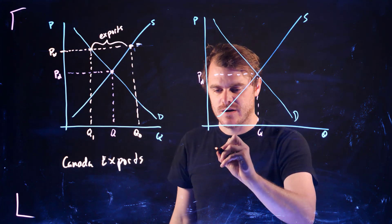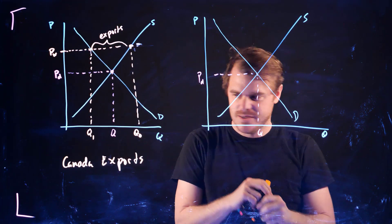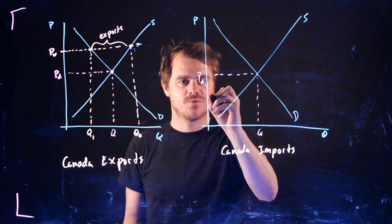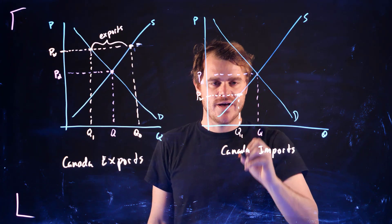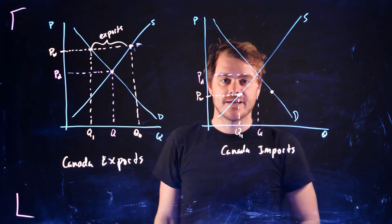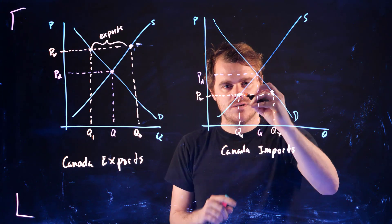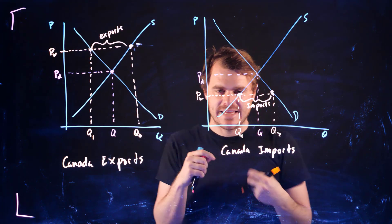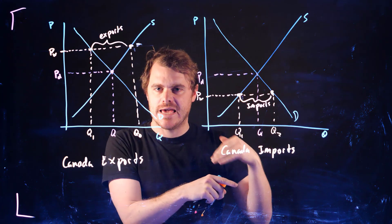Now we could have another situation where the world price is going to be below. I should spell the country's name correctly, Canada imports. So this is going to happen when the world price is below this autarchy price. So at this price, this Q1 is how much suppliers, Canadian suppliers, are willing to supply at this price. Well, this is how much Canadian consumers want at this price, this Q2. And so in this case, this amount here is going to be the amount of imports. So Q2 minus Q1 is the amount that Canada is going to import. So hopefully this gives you a better visual idea of what we are saying in that previous board.